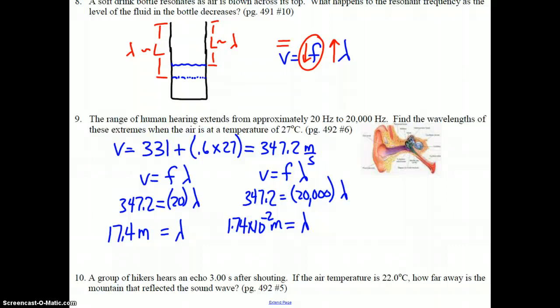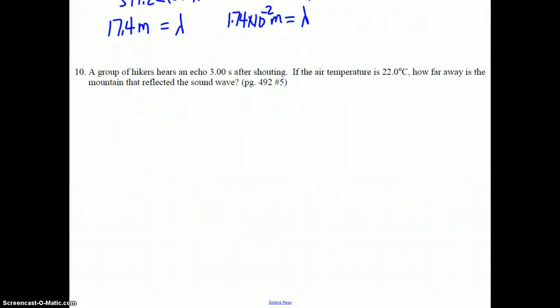Lastly, we go to number 10. A group of hikers hears an echo three seconds after shouting. If the air temperature is 22 degrees Celsius, how far is the mountain that reflected the sound wave? The first thing to note here is our first wave phenomenon that we're talking about here is reflection. A reflected sound wave is called an echo. Clearly, we're going to need to know the speed of sound in the air temperature in the air of this particular event, and so we have to go ahead and calculate what that is based on the 22 degrees Celsius.